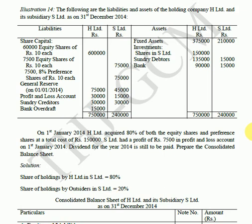Assets and liabilities: Share capital - holding company has 60,000 equity shares of rupees 10 each. Subsidiary company has 7,500 equity shares of rupees 10 each and 7,500 8% preference shares of rupees 10 each.